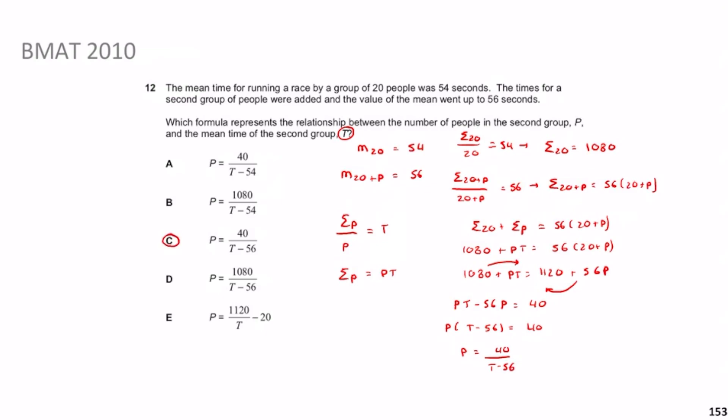I really hope that makes sense — very similar to the previous questions. The only tricky part in these questions is the arithmetic and being quick with it, but as you do more questions you'll get better at that. Hopefully the whole statistics series has made sense. The next series will be on probability, a really big topic for BMAT section 2 maths, so make sure you tune in for that. Take care of yourselves and see you next time.